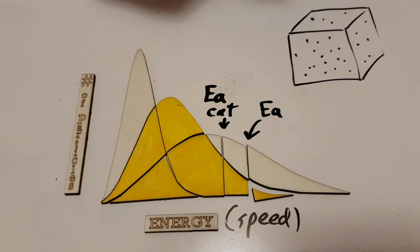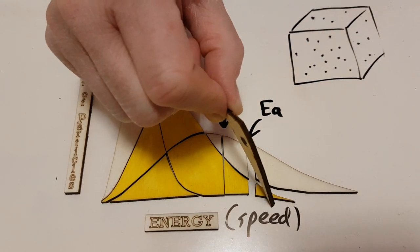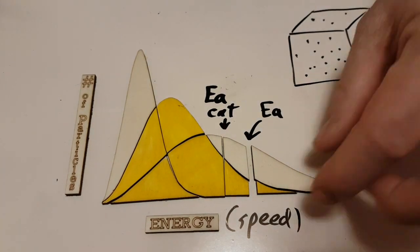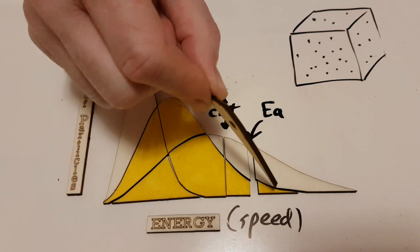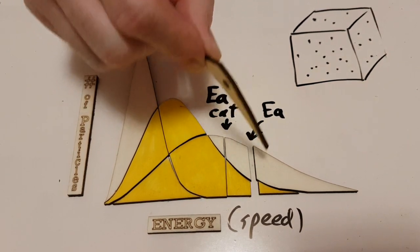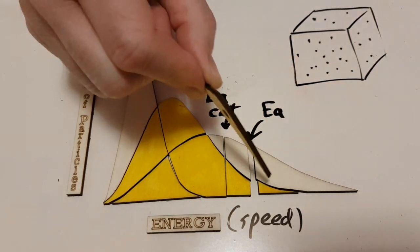What about this area here, these two together? So this is for the higher temperature. These particles have energy greater than activation energy at the higher temperature. And notice this area is greater. A greater area implies more of these atoms have enough energy to react.